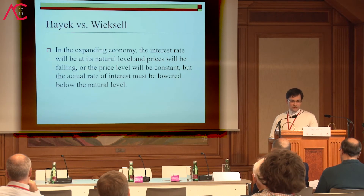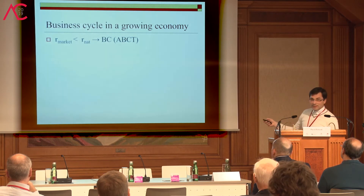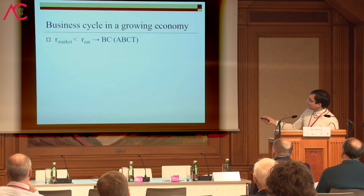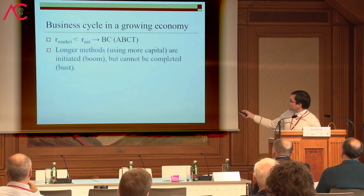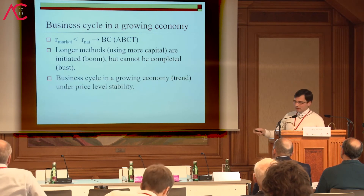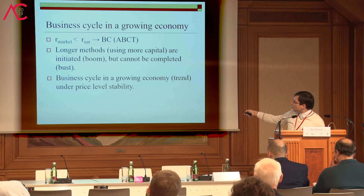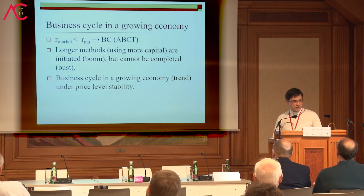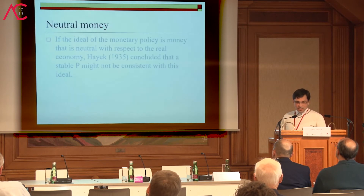As my colleague mentioned, this expansion in the money supply and the fact that the market interest rate is below the natural rate may provoke the business cycle — Austrian-style business cycle — where longer methods are initiated but cannot be completed, so we go from boom to bust. In Hayekian theory, we can have a business cycle even in a growing economy under price level stability, which is at odds with the standard New Keynesian approach.